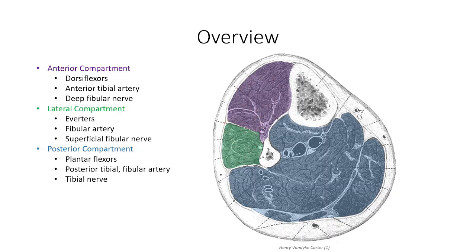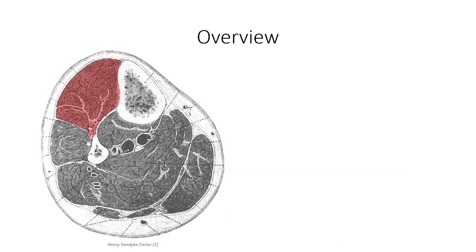The lateral compartment is involved in eversion and plantar flexion. The thickness of the crural fascia is of clinical significance — it plays an important role in countering blood pooling in the legs by limiting expansion of the compartments. This also increases the effectiveness of the skeletal muscle pump in squeezing the veins and milking blood back to the heart. This becomes a problem with instances of swelling. Since the compartments have limited room for expansion, swelling leads to increases in pressure, which can squeeze on the neurovascular components, compromising blood flow and causing neuropathies. The most susceptible is the anterior compartment, due to its small size and position.